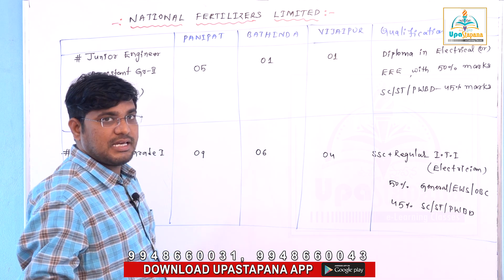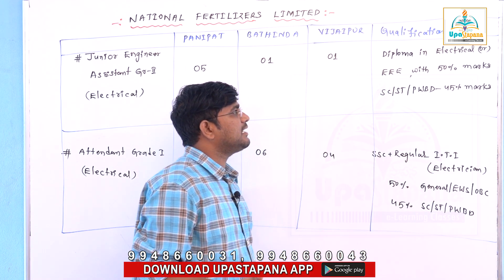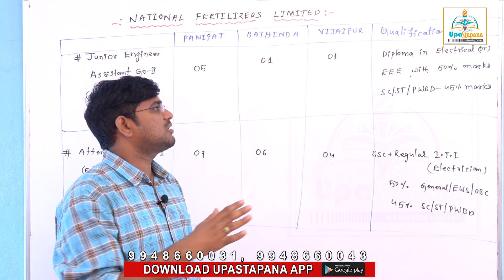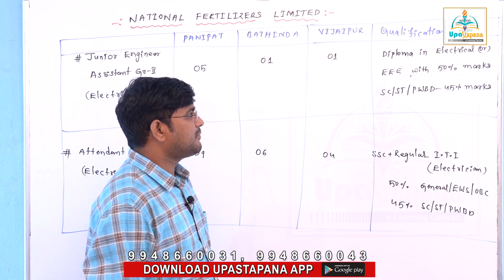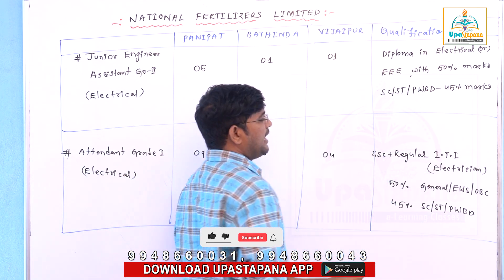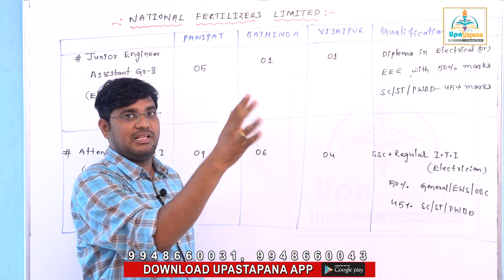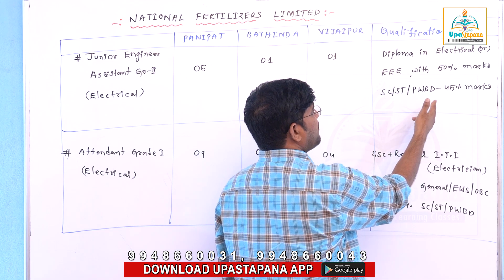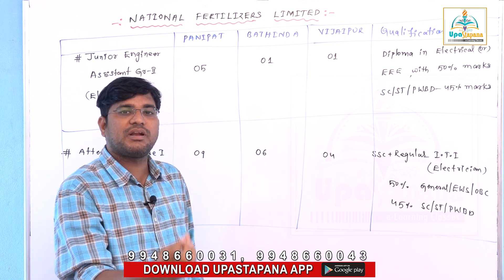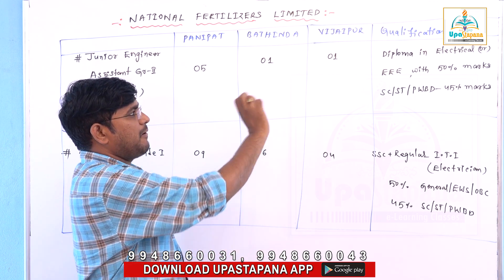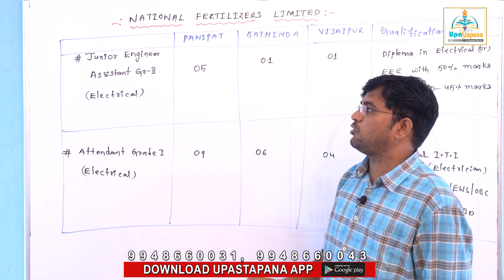For electrical engineering, the minimum qualification is a diploma in Electrical or EEE — that is Electrical and Electronics Engineering — with 50 percentage marks average and aggregate. 50 percentage marks are for General, EWS, and OBC candidates to fill this application. For SC, ST, PW, and BD categories, minimum 45 percentage marks aggregate applies. Diploma Electrical or Diploma EEE is required for Junior Engineer Assistant Grade 2 Electrical.